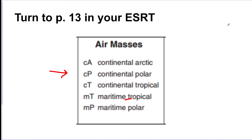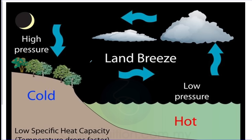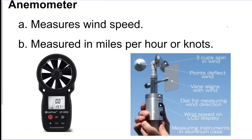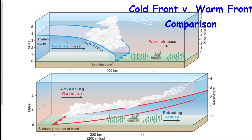Land and sea breezes: air goes from high to low pressure, so a sea breeze comes from the sea and a land breeze is the opposite. An anemometer measures wind speed in miles per hour or knots. When isobars are close together there's a lot of wind and it's probably low pressure. Cold fronts look more steep and warm fronts are more gradual.